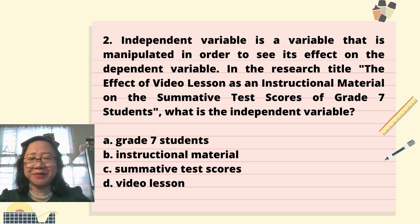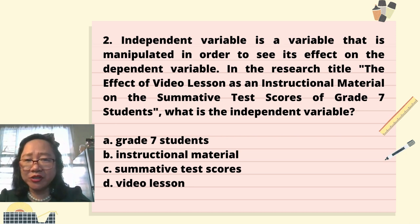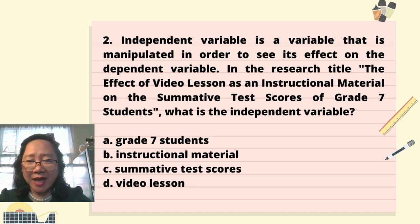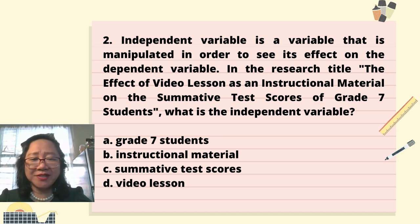Question 2: The independent variable is a variable that is manipulated in order to see its effect on the dependent variable. In the research title 'The effect of video lesson as an instructional material on the summative test scores of grade 7 students,' what is the independent variable? A. Grade 7 students. B. Instructional material. C. Summative test scores. D. Video lesson.